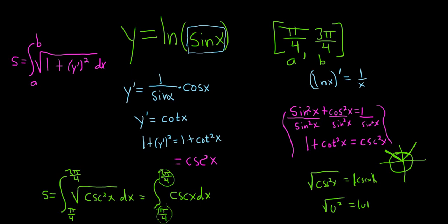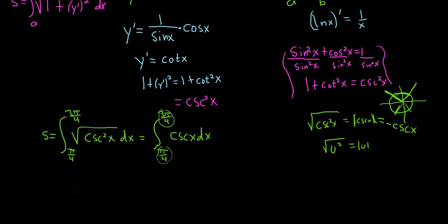So this is equal to — well, the integral of cosecant is a formula: negative ln of the absolute value of cosecant x plus cotangent x, evaluated from pi over 4 to 3 pi over 4.